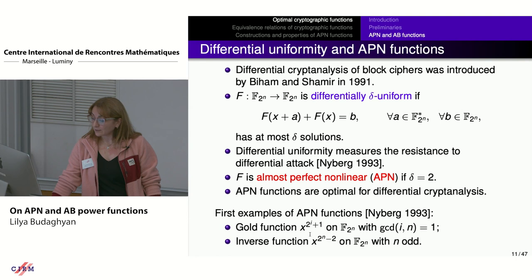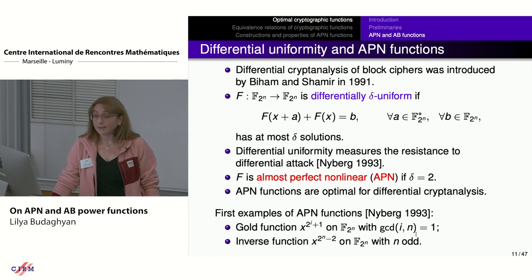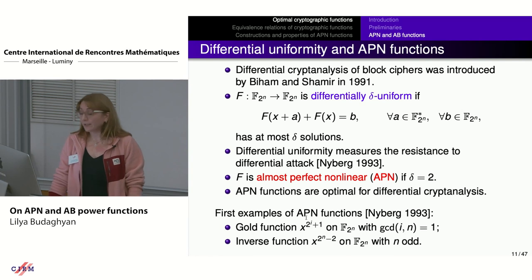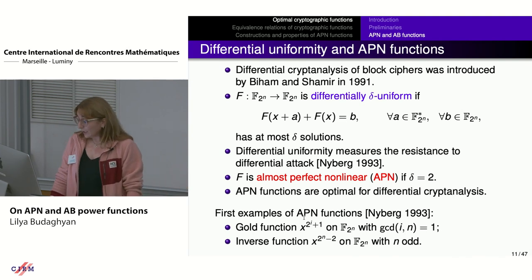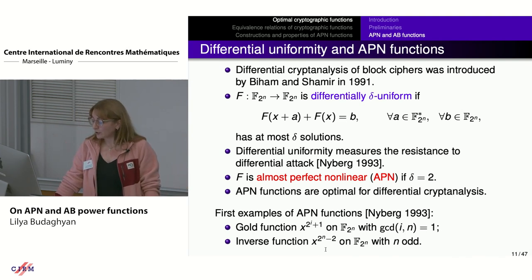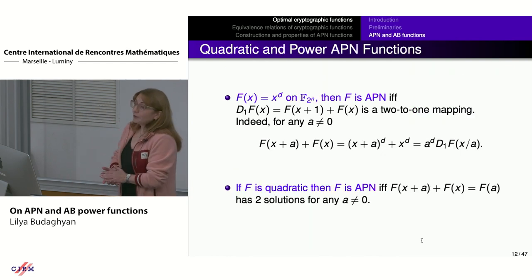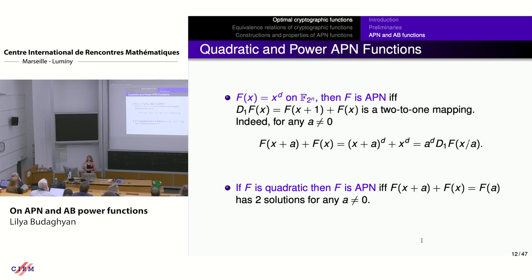Differentially 2-uniform functions are optimal because we are working in a binary field: if x₀ is a solution, then x₀ + a is also a solution. These optimal differentially 2-uniform functions are called almost perfect non-linear, or APN. The simplest examples of APN functions were given by Nyberg in 1993. These are power functions: the Gold function x^{2^i+1} over F_{2^n} with gcd(i,n)=1, and the inverse function x^{2^n−2} over F_{2^n} with n odd. Currently, almost all known APN constructions are equivalent to quadratic functions or to power functions.